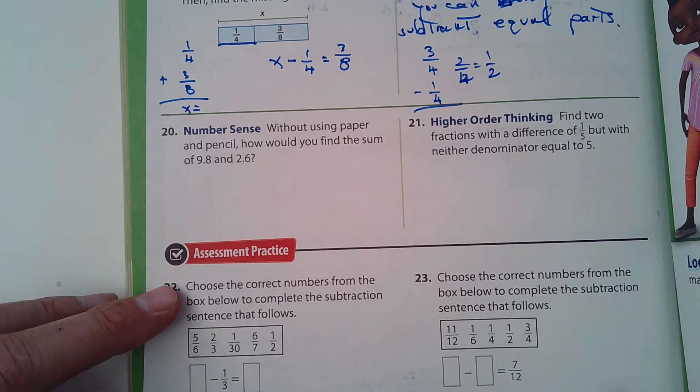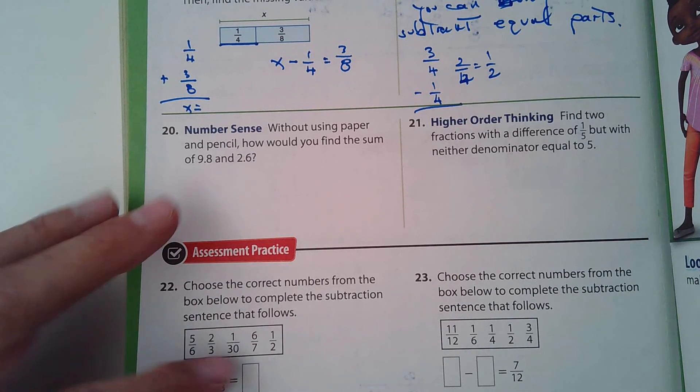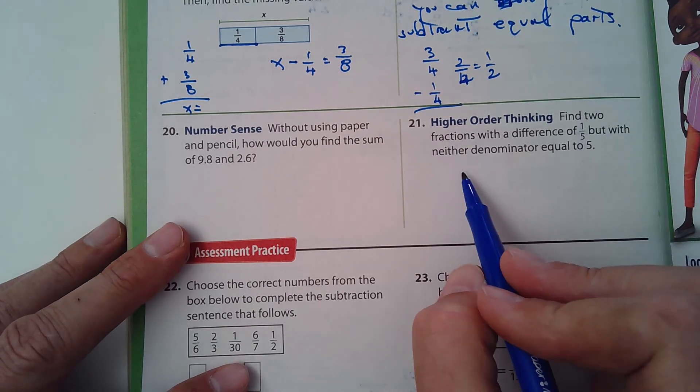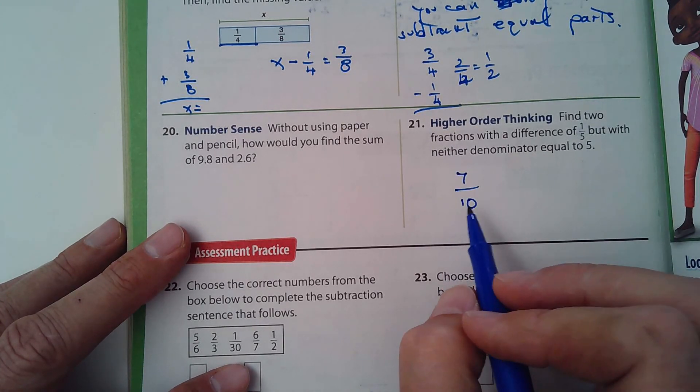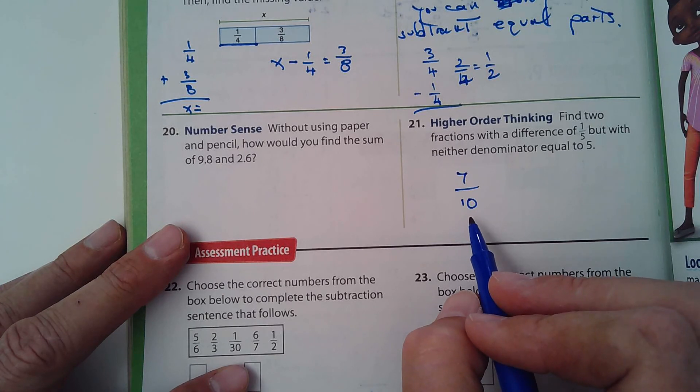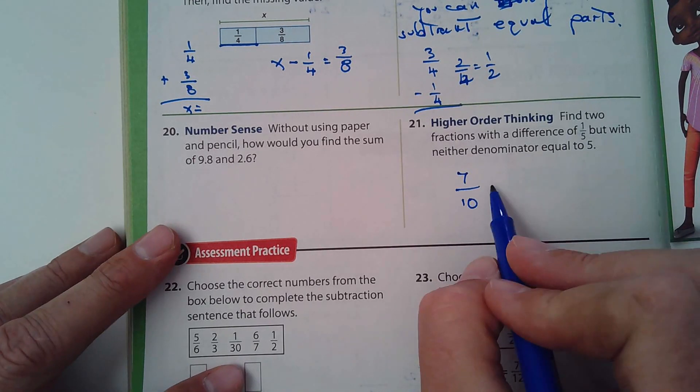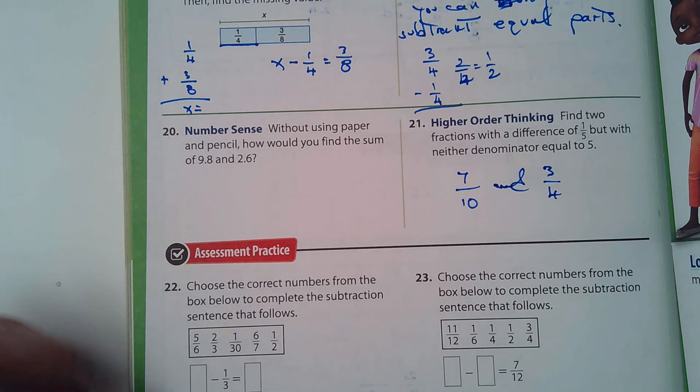21, find the fraction with the difference of one-fifth, but neither denominator is equal to five. Let's see if this works. I'll let you guys try this one. Seven-tenths and three-quarters. See if you can use those and if that will work.